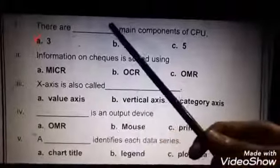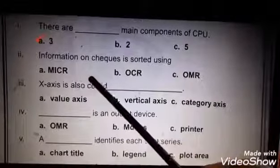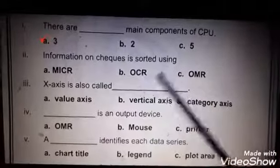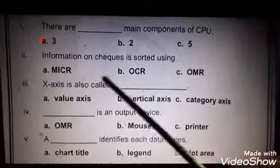Number 2: Information on cheques is sorted using - A: MICR, B: OCR, C: OMR. Right answer is MICR, option A.